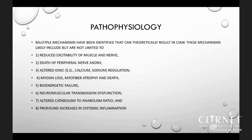The main pathophysiological mechanisms theoretically identified include: reduced excitability of muscle and nerve, death of peripheral nerve axons, altered ionic regulation of calcium and sodium, myosin loss, myofiber atrophy and death, bioenergetic failure, neuromuscular transmission dysfunction, altered catabolism-to-anabolism ratio, and profound increase in systemic inflammation.